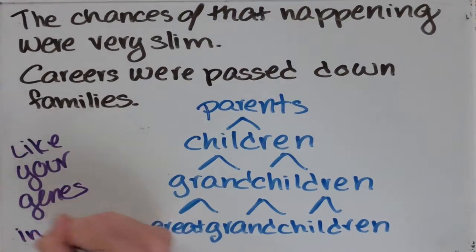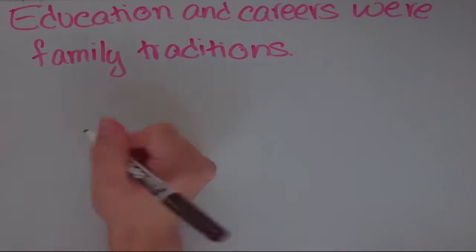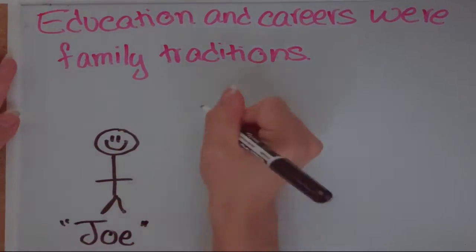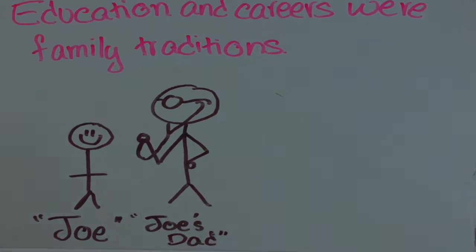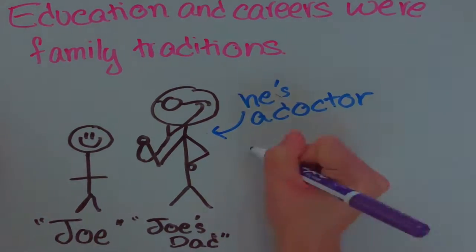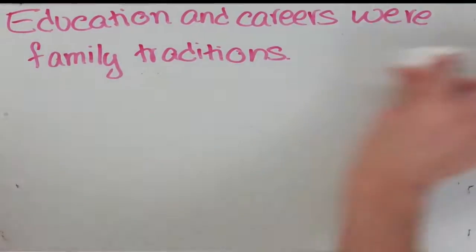For instance, children were expected to follow in their parents' career paths and make it a familial tradition. For example, meet Joe and his dad. His dad is a doctor. Because of this, if Joe wants to become a doctor, he has a better chance of becoming one because it is a family tradition. Not only that, he would be expected to become one because his father is a doctor.